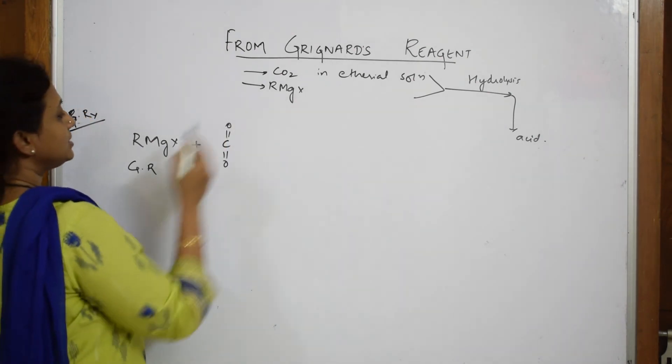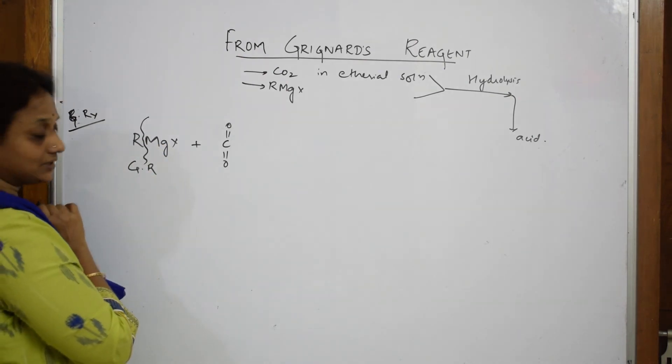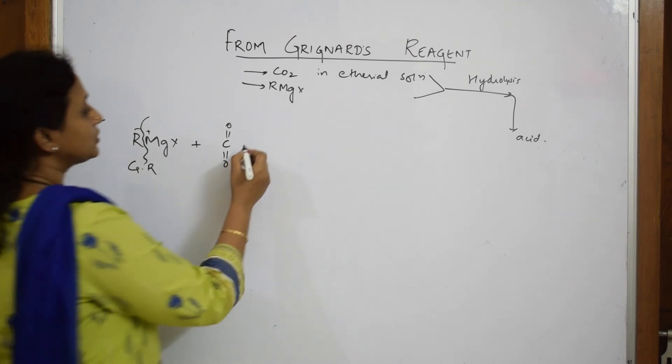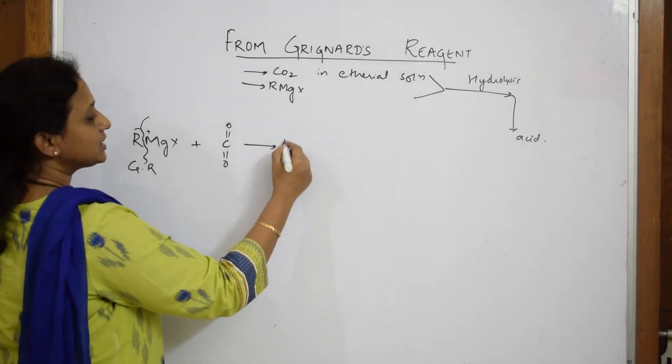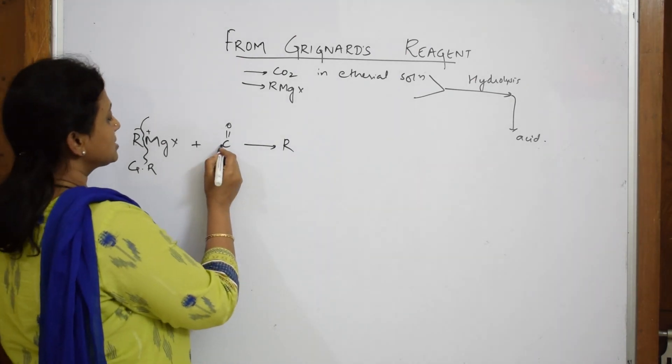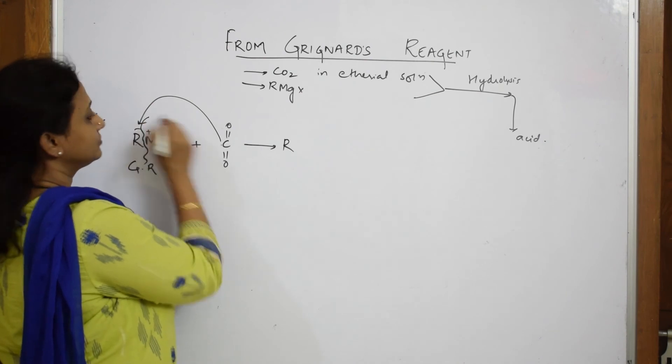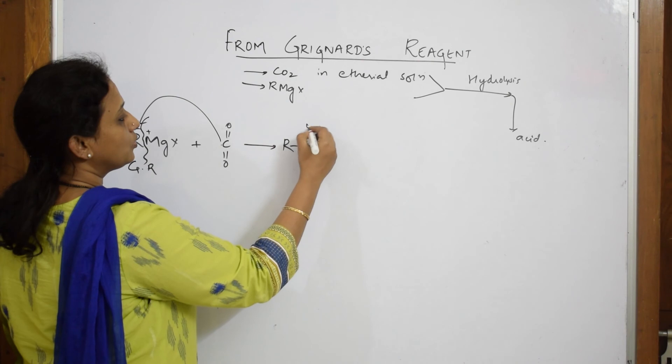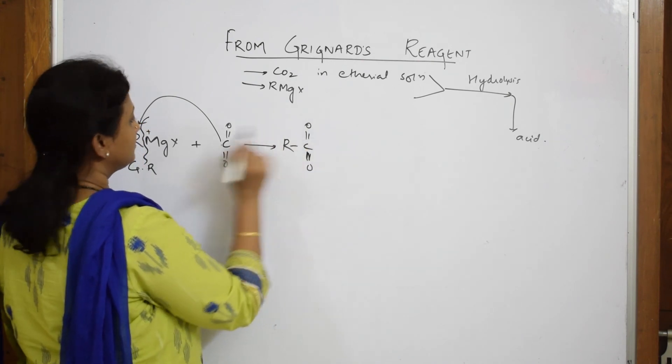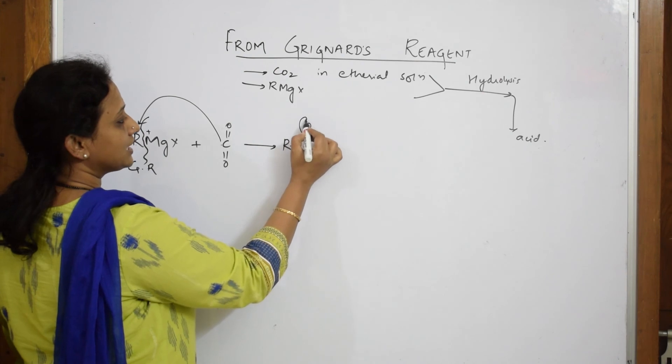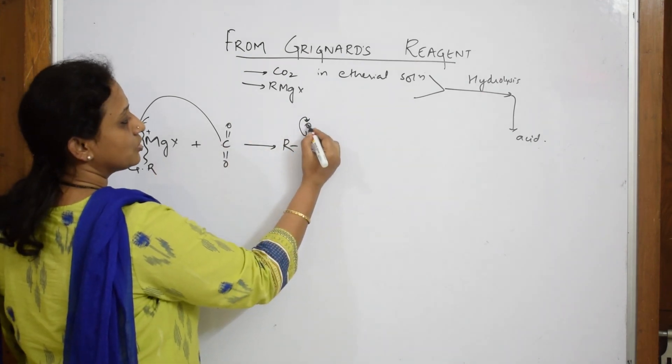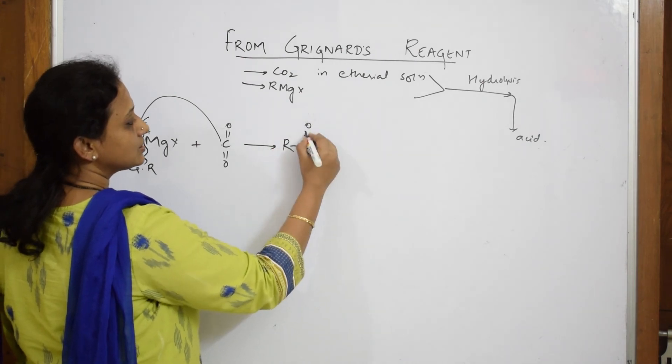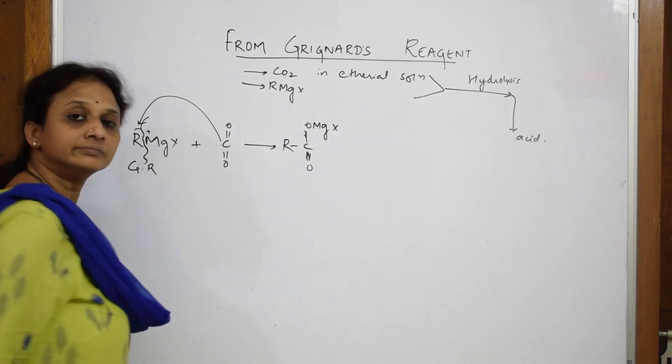As soon as this is added in ethereal solution, there is a cleavage of the bond exactly here. This becomes plus and this becomes minus. Now observe carefully how this goes and adds. Your R, first write R. Join this to R. C double bond O. Double bond O. This can't be, because unless this bond breaks you will not get Mg-X. So this bond shifts. This becomes a single bond. Shift Mg-X.